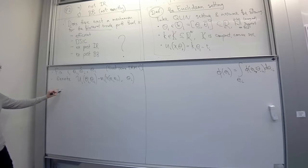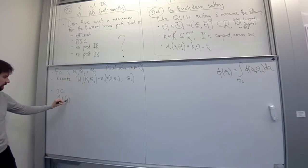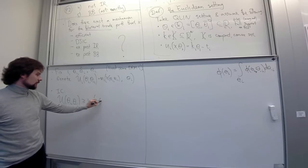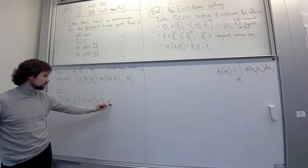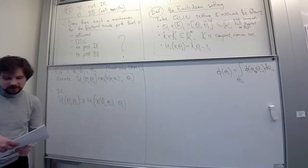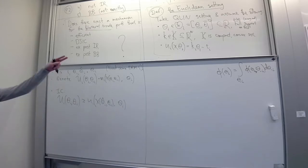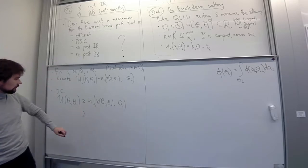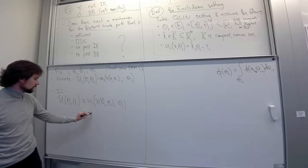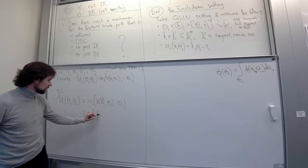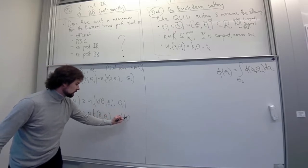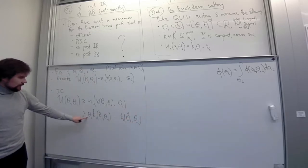The incentive compatibility condition says: this equilibrium utility from telling the truth should be at least as large as the utility of player i from misreporting their type as theta-hat, while their true type is still theta_i. Using the structure of the Euclidean model, u_i is given by theta_i times k_i(theta-hat_i, theta_{-i}) minus the transfer t_i for that profile of reports.